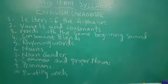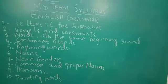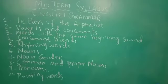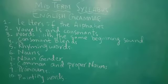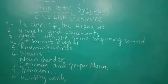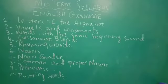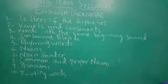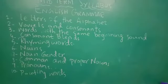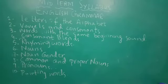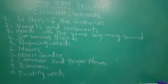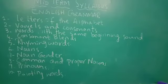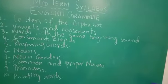Let's start. Topic one is letters of the alphabet, number two vowels and consonants, number three words with the same beginning sound, number four consonant blends, number five rhyming words, number six nouns, number seven noun gender, number eight common and proper nouns, number nine pronouns, and number ten pointing words.